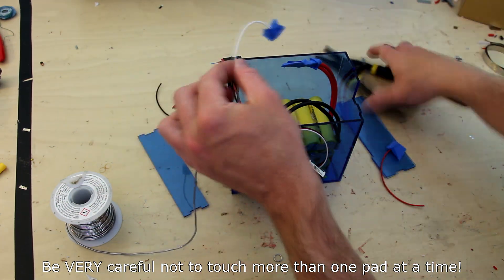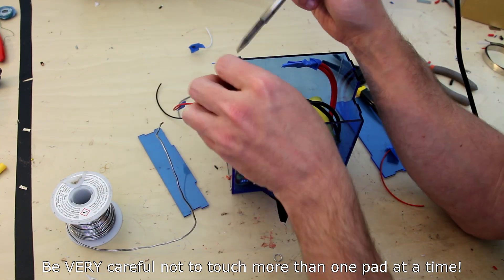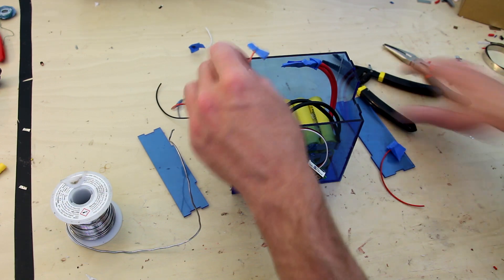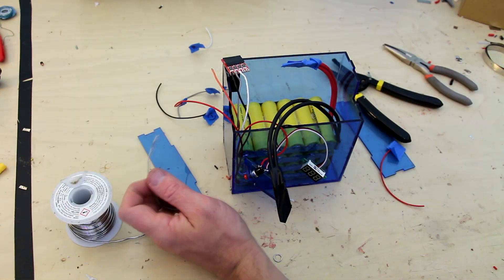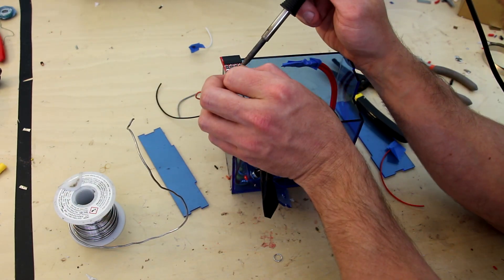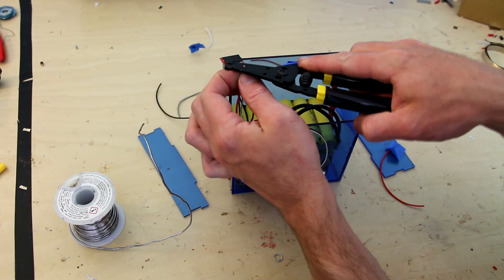The negative lead of the battery goes to B- or B0 depending on which BMS system you have. Then each set of batteries in sequence goes one through four all the way up to the positive lead going to B4 or B+. Again be very careful here not to short out the board when soldering, as this will cause a short that could damage your system.